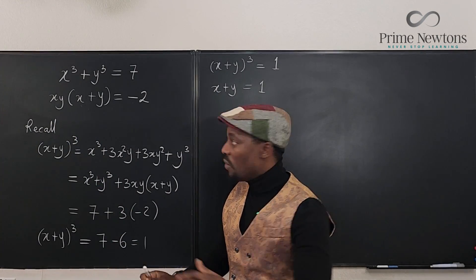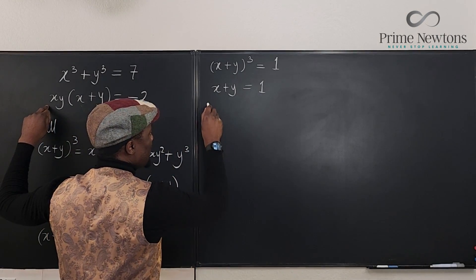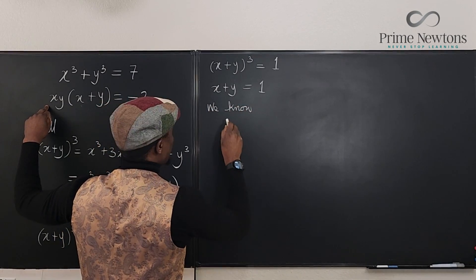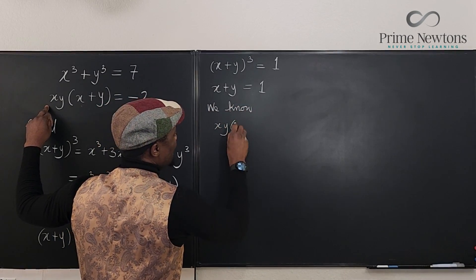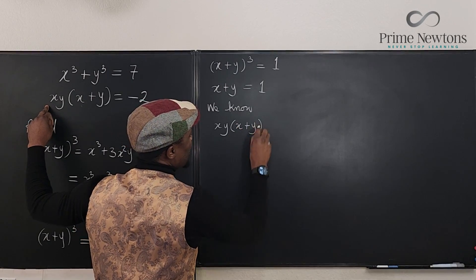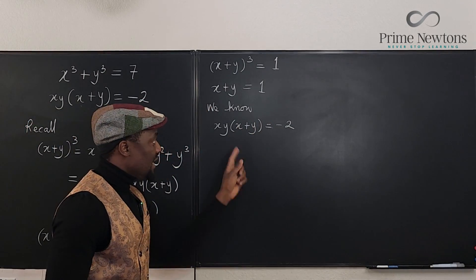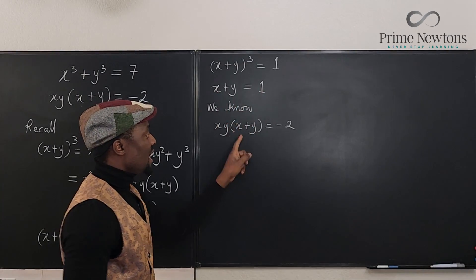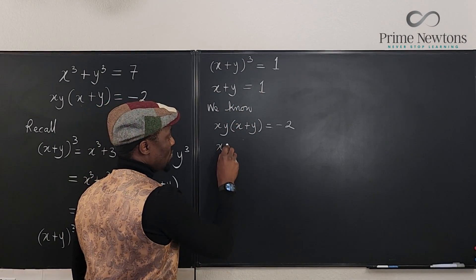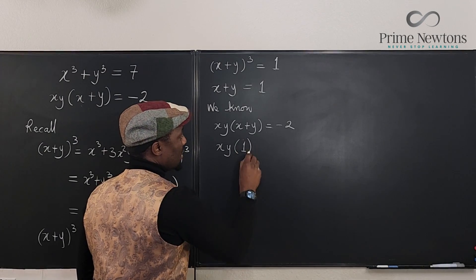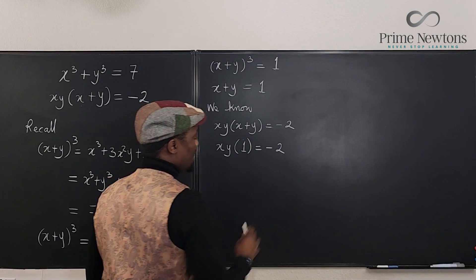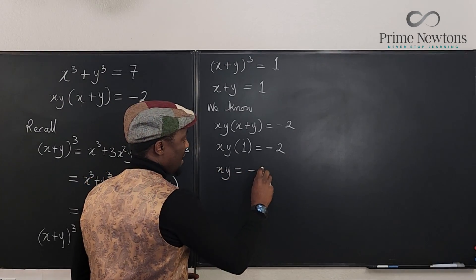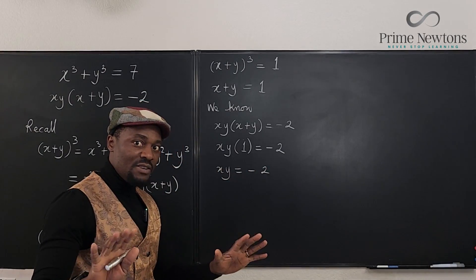So from the second equation, we know that xy times (x + y) is equal to negative 2. I can easily write 1 here to represent x plus y so that xy times 1 equals negative 2. Well, it shows that xy equals minus 2. So here is what we have.